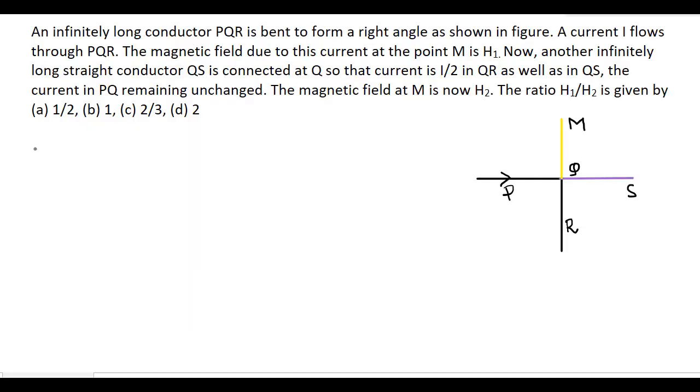Now first we have to calculate H1, that is the magnetic field due to PQR at M. Now this will be equal to HPQ plus HQR. Now this is equal to HPQ. For this semi-infinite length PQ, this is equal to mu 0 I divided by 4 pi R, where R is the distance QM.